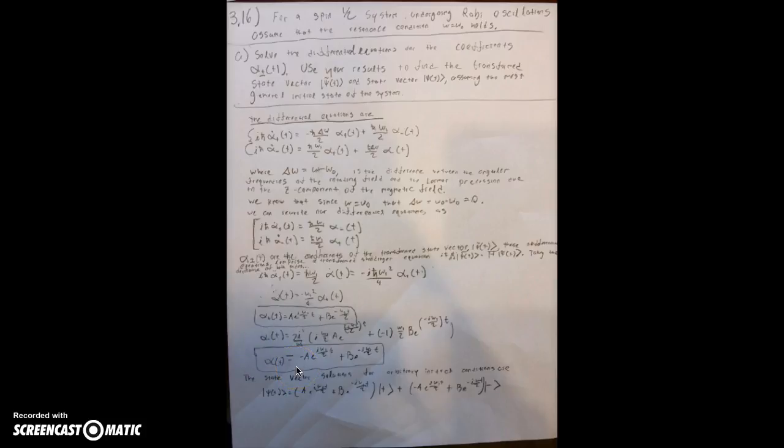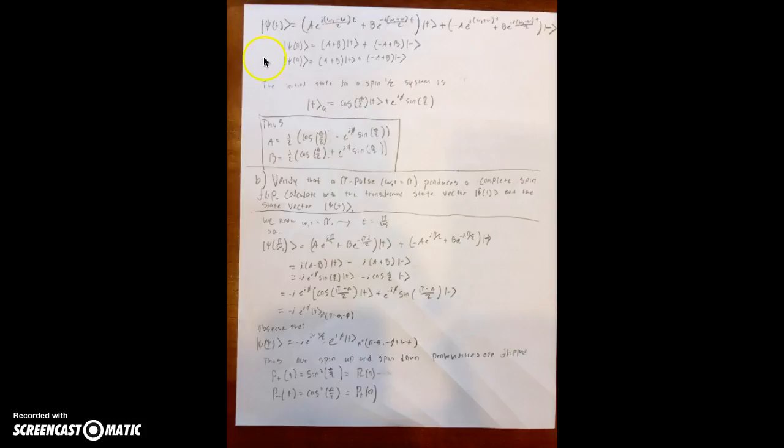The state vector solutions for arbitrary initial conditions are shown here. We have our initial state vector, and we subtract omega from omega 1 in the exponent. When t is equal to zero, we have our initial state vector at t equals zero.